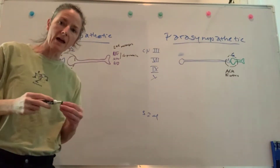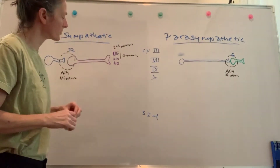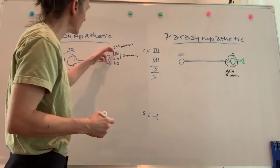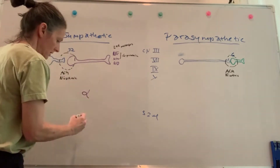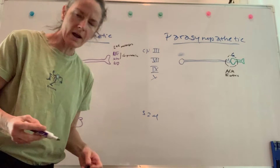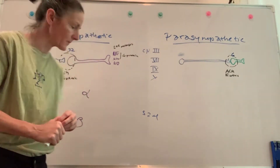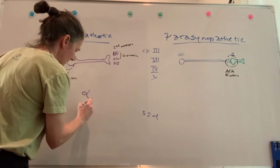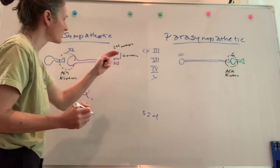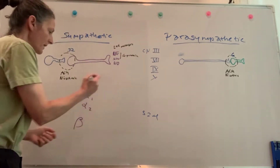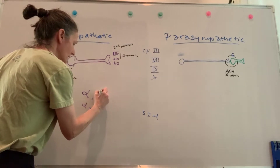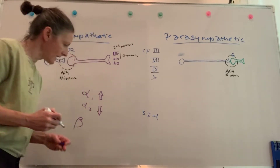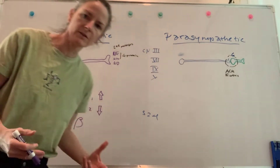We're going to look at adrenergic synapses, and there are really two major types of adrenergic receptors: alpha and beta. They're quite complex and we'll only touch on a few things. Alpha receptors come in two subdivisions: alpha-1 and alpha-2. Alpha-1, when they receive the neurotransmitter, will typically up-regulate metabolic activity. Alpha-2 will typically down-regulate metabolic activity and just the activity of the cell.